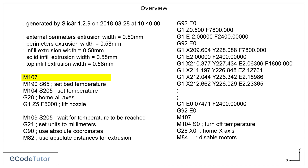Sometimes the software we use to generate the G-code doesn't add operator's notes. But here we have M107, so I have to refer to my sheet of what M-codes mean to understand what this line of code does. M107 turns the fan off. It's probably not needed in this section of the program, but it just makes sure the fan is not running before we start our cycle.